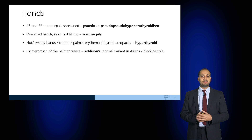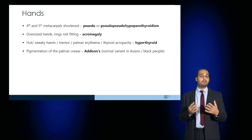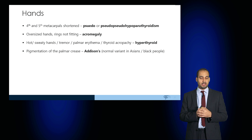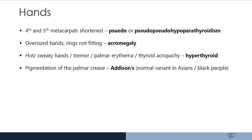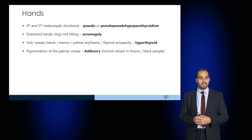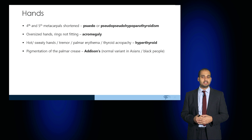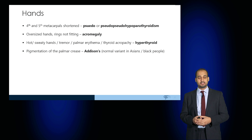When examining the hands, pay attention to the fourth and fifth metacarpals. Shortening of these may indicate pseudo-pseudo-hypoparathyroidism. Oversized hands or rings not fitting may suggest acromegaly. Hot, sweaty hands with a tremor and palmar erythema, or clubbing or thyroid acropachy, may indicate hyperthyroidism. Pigmentation of the palmar creases may indicate Addison's disease.